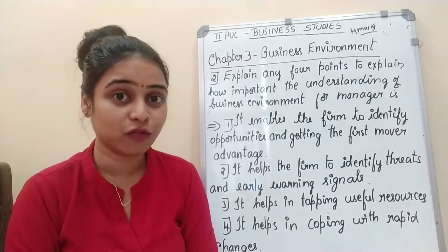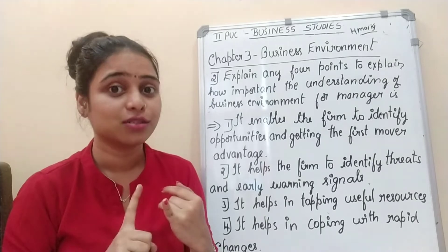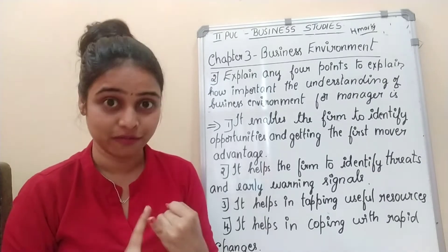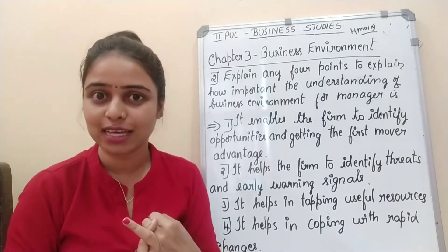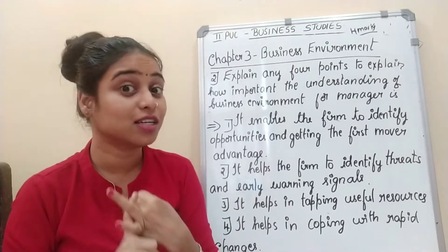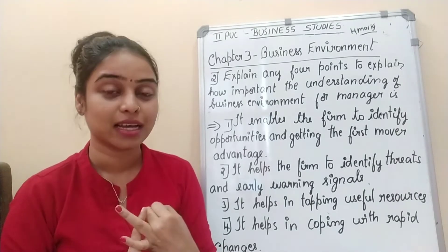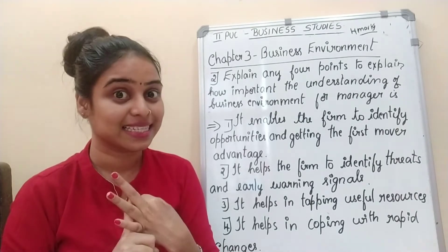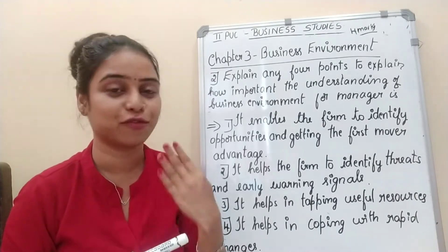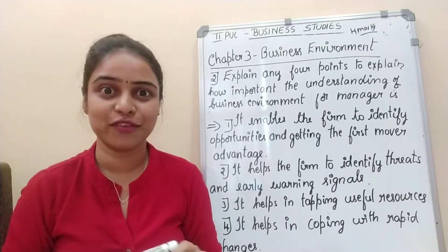So what were the 4 features? Number 1: it is the totality of external forces. Number 2: specific and general forces. Number 3: dynamic in nature. And number 4 was relativity.